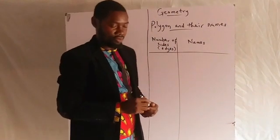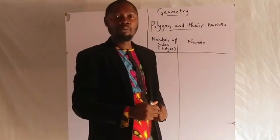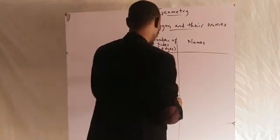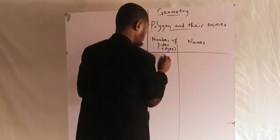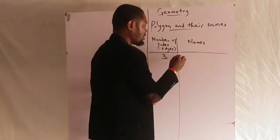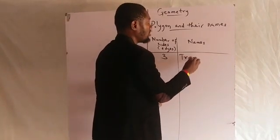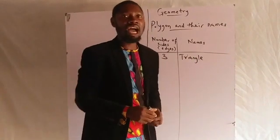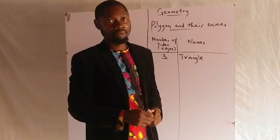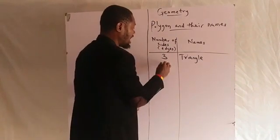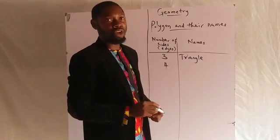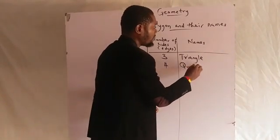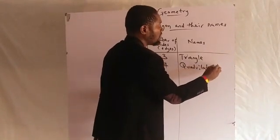The first polygon we are going to look at is the one that has three sides. A three-sided polygon is called the triangle. Then we have the one with four sides — the four-sided polygon is called the quadrilateral.